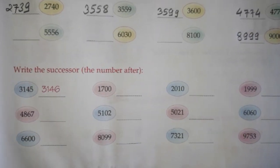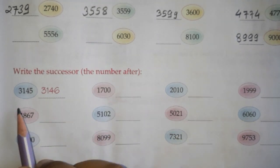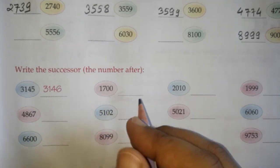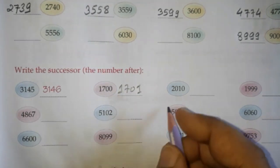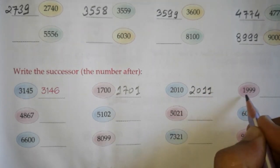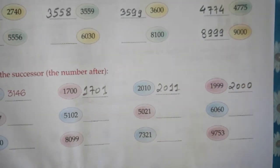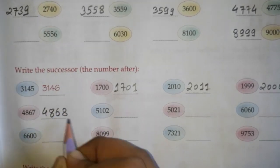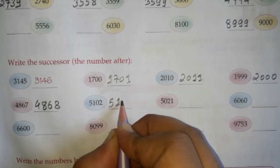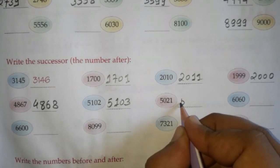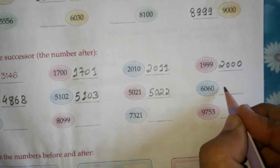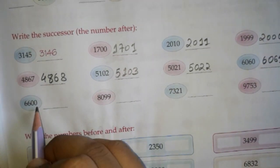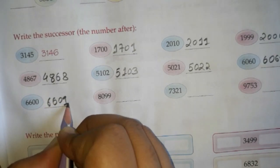The next question is write the successor — the number which comes after the given number. 3145 is solved: 3146. Next is 1700: successor is 1701. 1999: successor is 2000 — you can add 1 to find it. 4867: successor is 4868. 5102: next number is 5103. 6060: next number is 6061. 6600: next is 6601.